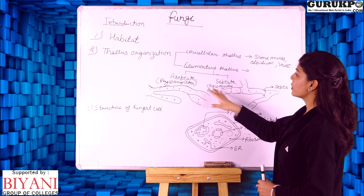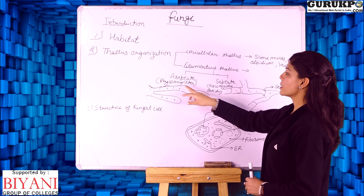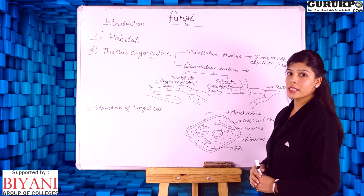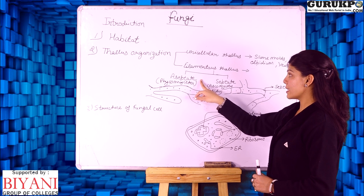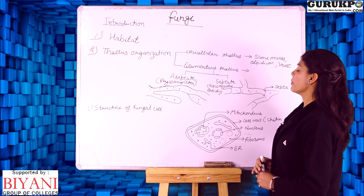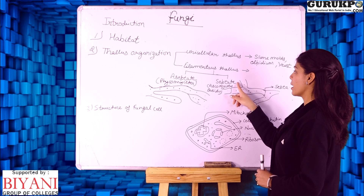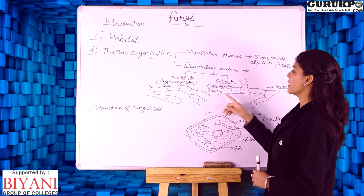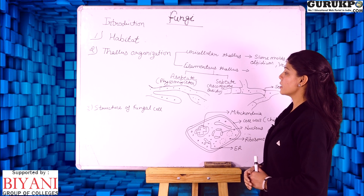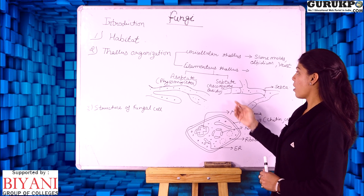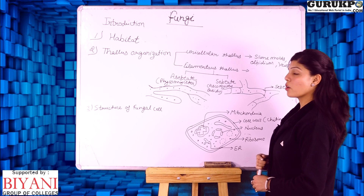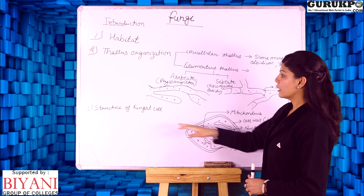Examples: Phycomycetes have aseptate mycelium, while Ascomycetes and Basidiomycetes have septate mycelium.